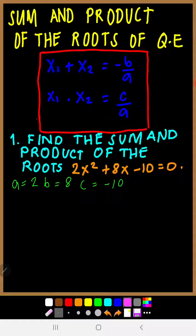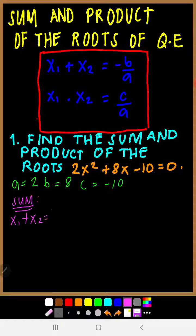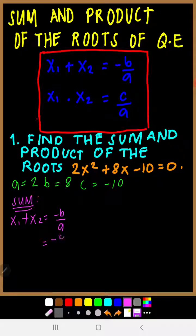If we're going to look for the sum first — which is x sub 1 plus x sub 2 — the formula is negative b over a. We substitute the values: negative b is negative 8, and a is 2. Therefore, our sum is negative 4.